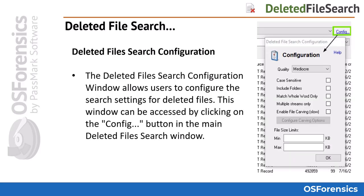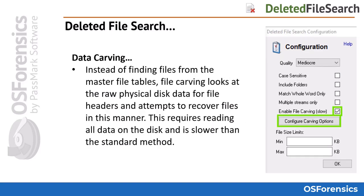For a deeper scan you will want to enable file carving in the config options. File carving will search for known file headers and footers, when applicable, for specified file types. Instead of finding files from the master file table, file carving looks at the raw physical disk data for file headers and attempts to recover files in this manner. This requires reading all data on the disk and is slower than the standard method.